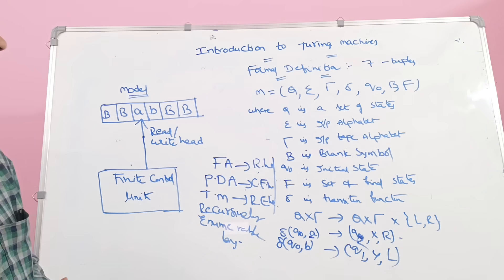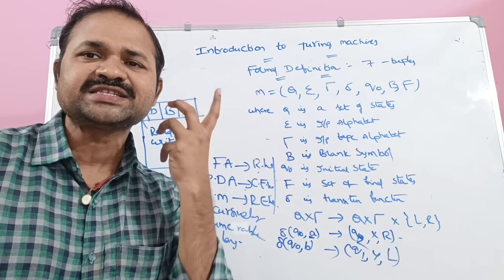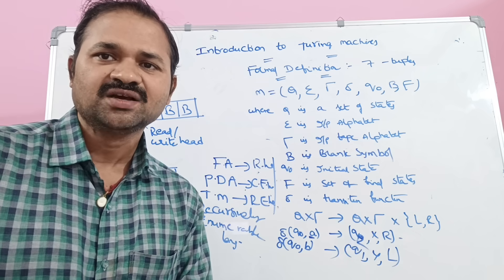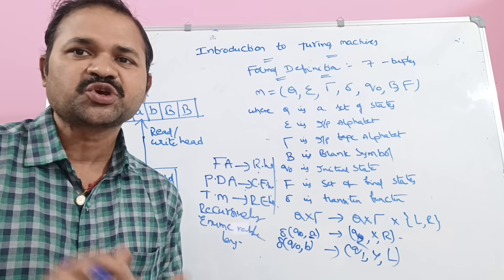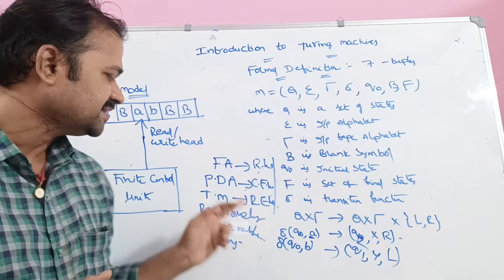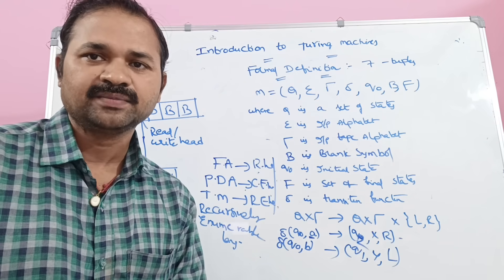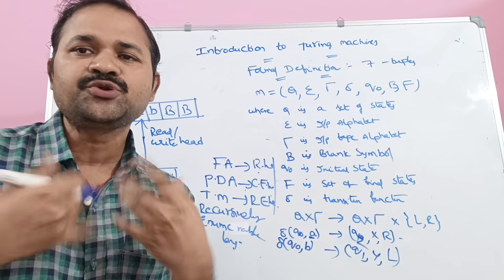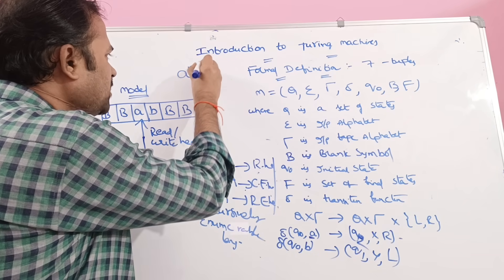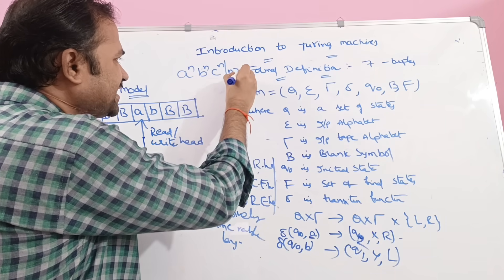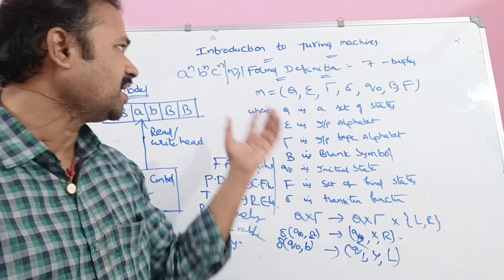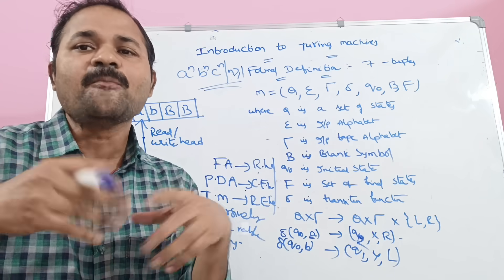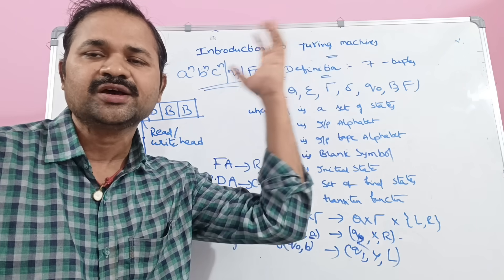Let us see what is the need of Turing machines. We know that the problem with finite automata is that it has a limited amount of memory. If you want to store some complex languages, we have to go for pushdown automata. But again, pushdown automata recognizes only simple languages. For example, it cannot accept a language like A^N B^N C^N where N ≥ 1. So if you want to accept a complex language, we have to go for a Turing machine.